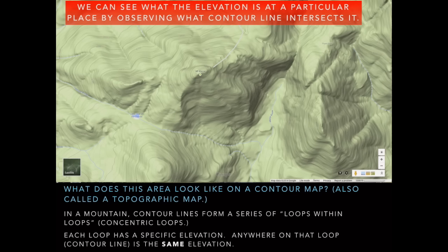We can see what the elevation is at a particular place by identifying which contour line intersects it. The first line we're going to look at is the 5,200-foot contour line. I've drawn it in red, so you can see that anywhere along that red line is at the 5,200-foot elevation. There is the 5,000-foot contour line — anywhere on that line I've drawn in is 5,000 feet.